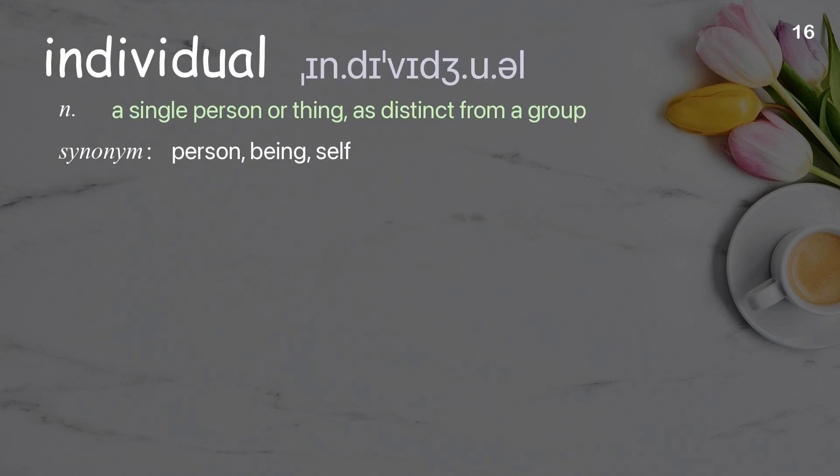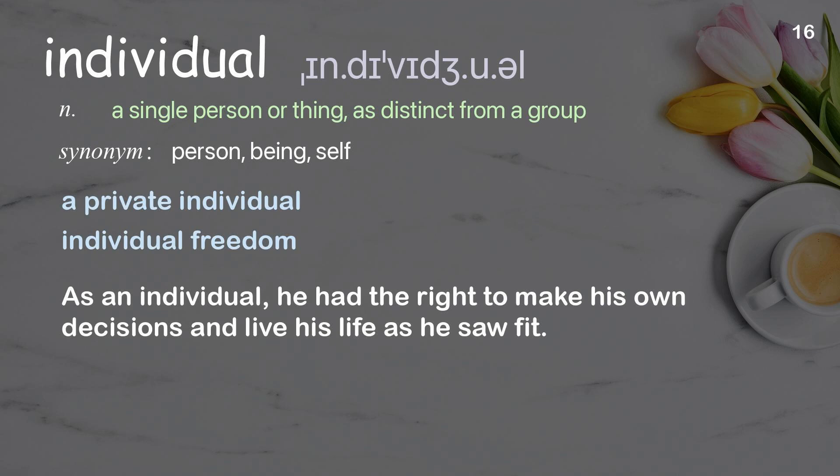Individual: A single person or thing as distinct from a group. Examples: a private individual, individual freedom. As an individual, he had the right to make his own decisions and live his life as he saw fit.